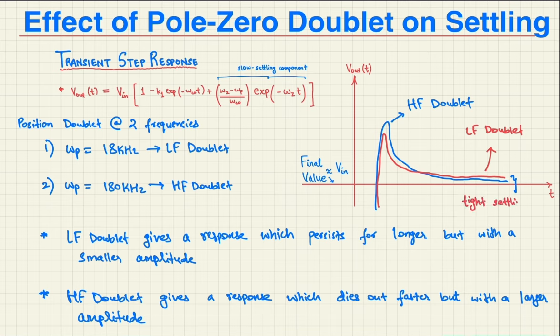However, for not a very tight settling, meaning for a longer error tolerance or a larger error tolerance, the low frequency doublet would settle faster since its amplitude is much smaller than the high frequency doublet. And thus, it doesn't affect as much.